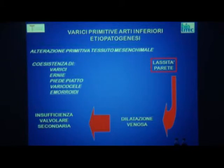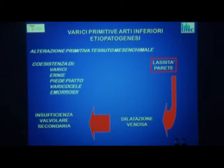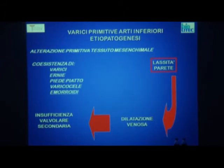Perché questo? Perché il tessuto connettivo della parete venosa risulta essere, su base congenita, molto più debole, per cui la parete tende a dilatarsi più facilmente. Di conseguenza, al momento in cui si dilata, le valvole si allontanano, vi è un'insufficienza valvolare secondaria che poi innesca quel circolo vizioso di stasi venosa, ulteriore dilatazione, ulteriore insufficienza.